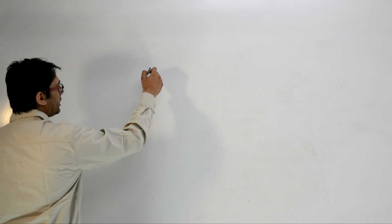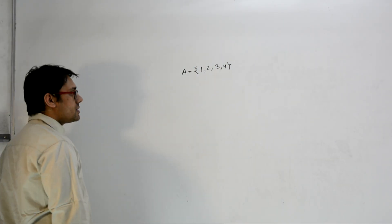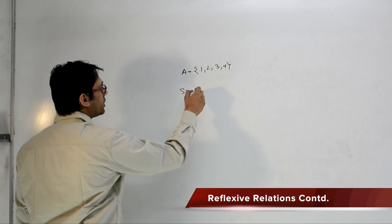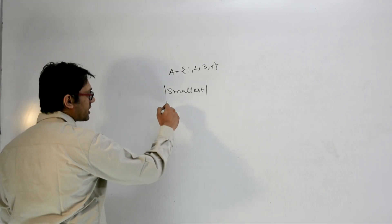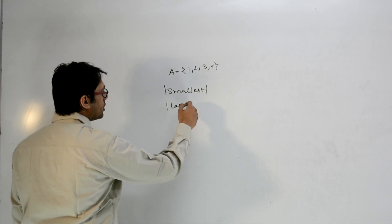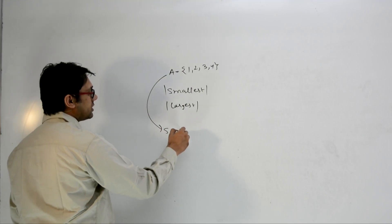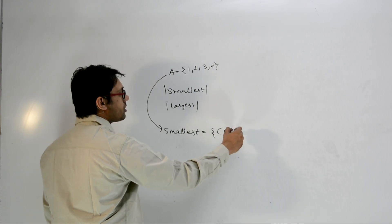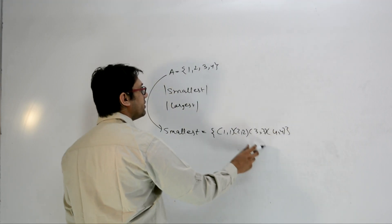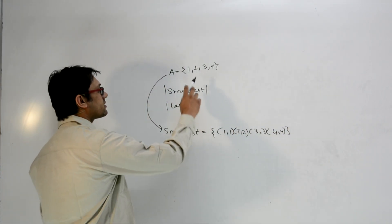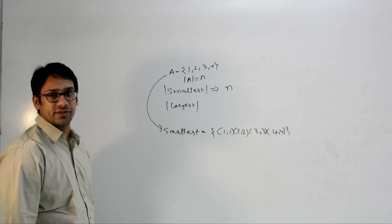We have the set A containing elements 1, 2, 3, 4. What is the cardinality of the smallest reflexive relation possible over this set A? The smallest reflexive relation is going to contain (1,1), (2,2), (3,3), and (4,4). This is the smallest reflexive relation possible over A. So if the cardinality of set A is N, then the smallest reflexive relation will have N elements.